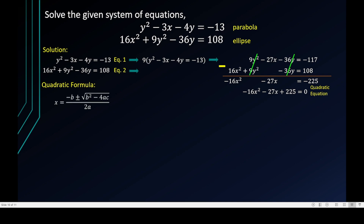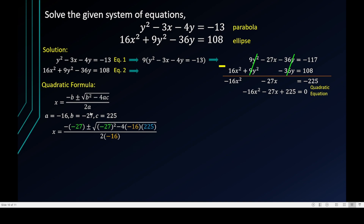Using the quadratic formula: x = [−b ± √(b² − 4ac)] / 2a. Note that we now have x as the variable. Here a = −16, b = −27, and c = 225. Substituting: x = [−(−27) ± √((−27)² − 4(−16)(225))] / (2(−16)), which gives x = [27 ± √15129] / (−32).